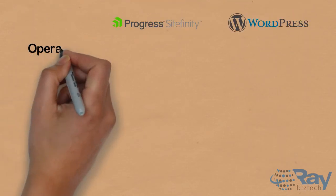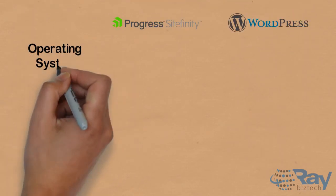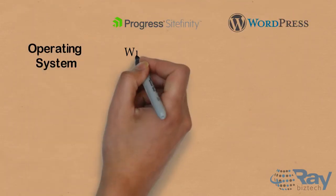Web server for Sitefinity is Windows 2008, 2008R2, 2012 and 2012R2. And for WordPress, it's Apache.